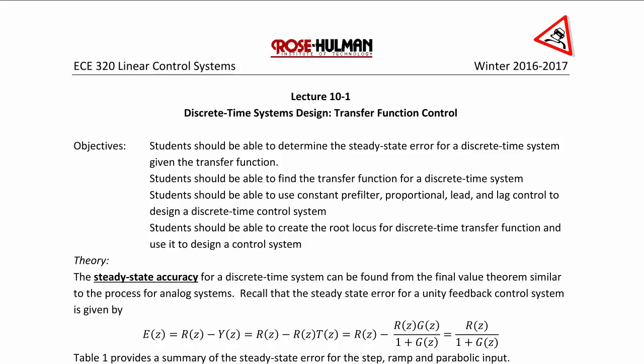The objectives of today's lecture are that students should be able to determine the steady state error for a discrete time system given the transfer function. Students should also be able to find the transfer function for a discrete time system, and to use a constant pre-filter, proportional, lead, and lag control to design a discrete time control system.